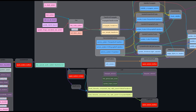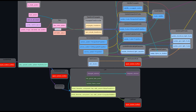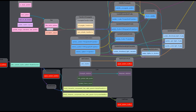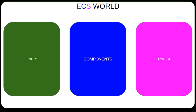This is made possible with a combination of the ECS world and Rust's type system, which provides a safe and efficient way to execute systems concurrently. The specific implementation of the ECS world depends on the framework you are using. Some frameworks may have more advanced functionality or offer more customization options than others. Nevertheless, the ECS world remains an important concept to understand when working with ECS-based game engines.